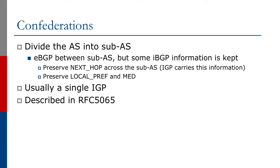For example, the next hop is preserved across the sub-autonomous systems, local preferences and MEDs are preserved as well. We don't touch the IGP, same as for route reflectors. BGP confederations are described in RFC 5065.